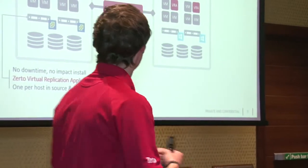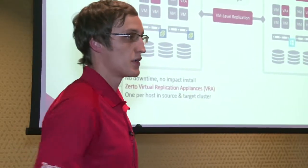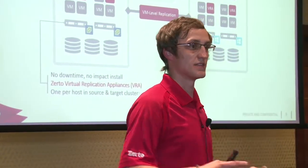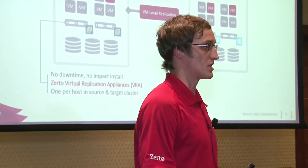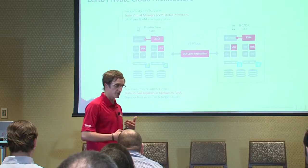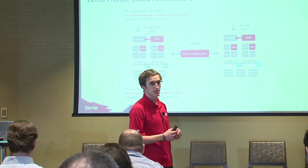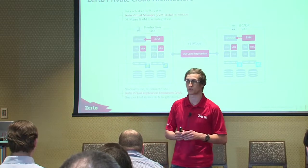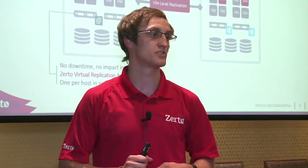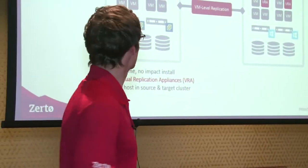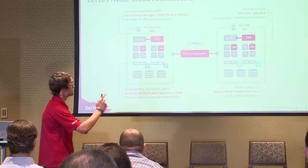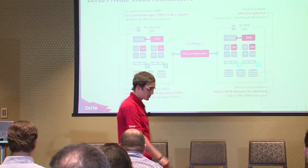The ZVM is there for management and the GUI, while the VRAs are responsible for splitting out the writes and doing compression between the two sites. We're an asynchronous technology, so we can go over geodistances — hence how we can go into clouds. Being an async technology also gives us significant advantages in how we intercept the I/O coming through the VMware I/O stack. We do not require acknowledgment to all the different components, and therefore we do not slow down your applications.